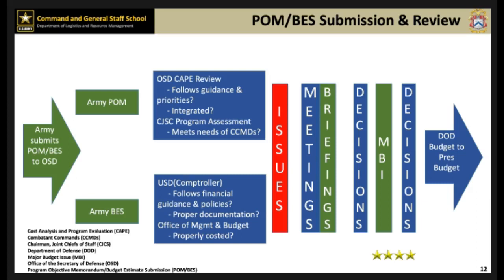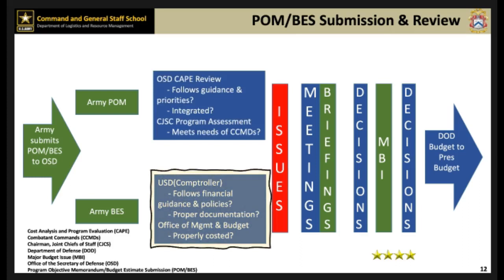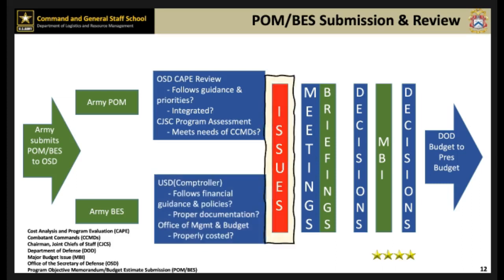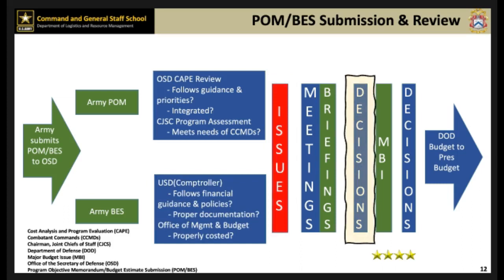This slide simplifies the POM-BES submission and review process. Once complete, the POM-BES is submitted to OSD for review. The POM is reviewed by the OSD Cost Analysis and Program Evaluation, or CAPE, to ensure that it complies with defense planning guidance and accounts for congressionally directed changes. The Chairman addresses the program to ensure it meets the needs of the combatant commanders. The BES is reviewed by the Under-Secretary of Defense Comptroller to ensure programs are funded in accordance with current fiscal guidance and provide the proper level of justification to Congress. The OMB ensures that programs are properly costed — that is, they check the math. Remaining changes are published in decision memoranda, such as program decision memorandums and program budget decisions.